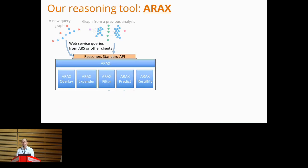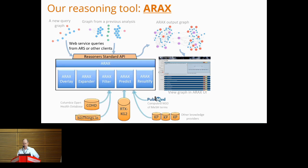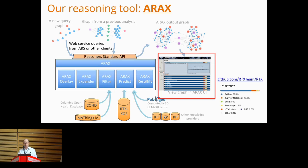The modular reasoning agent that our team developed is called ARAX. It provides capabilities for building a working knowledge graph and extracting from it a list of ranked results. For performance reasons, ARAX retrieves information from RTX KG2, a large in-house knowledge graph. ARAX also queries a variety of Translator knowledge providers and external knowledge sources. Both the user interface and other Translator systems can access ARAX via its web interface, and ARAX's code is available on GitHub.